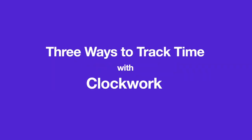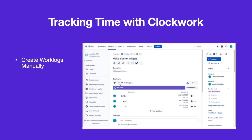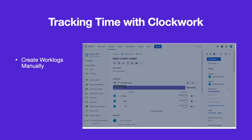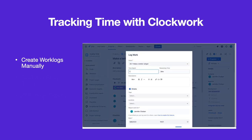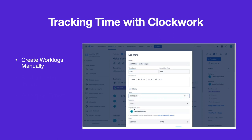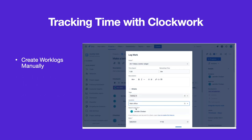There are three different ways to track time with Clockwork for JIRA. Clicking on the plus button will open the work log dialog with the issue drop-down pre-populated. Along with recording the time worked on the issue, you can add a description and complete any other fields your administrator has configured on your work logs.